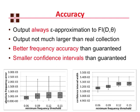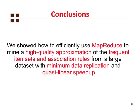In conclusion, we developed an algorithm for the MapReduce framework to mine a high-quality approximation of the frequent itemsets and association rules of a large dataset, with minimum data replication and quasi-linear speedup. The difficult part was integrating, merging, and filtering results from the mining of many different random samples of the dataset into a single output collection, using an optimization framework and probabilistic analysis. Thanks again for coming to my talk. I'm sorry I couldn't come to Maui and present in person. If you have any questions, please send them to my email address, matteo at cs.brown.edu.